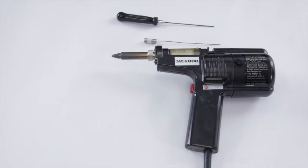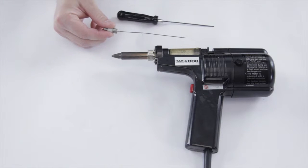So in today's video we're going to show you how to clean out the nozzle and tip on the Hakko 808 desolder gun. The recommended cleaning system is to use the cleaning rod that comes in the kit.